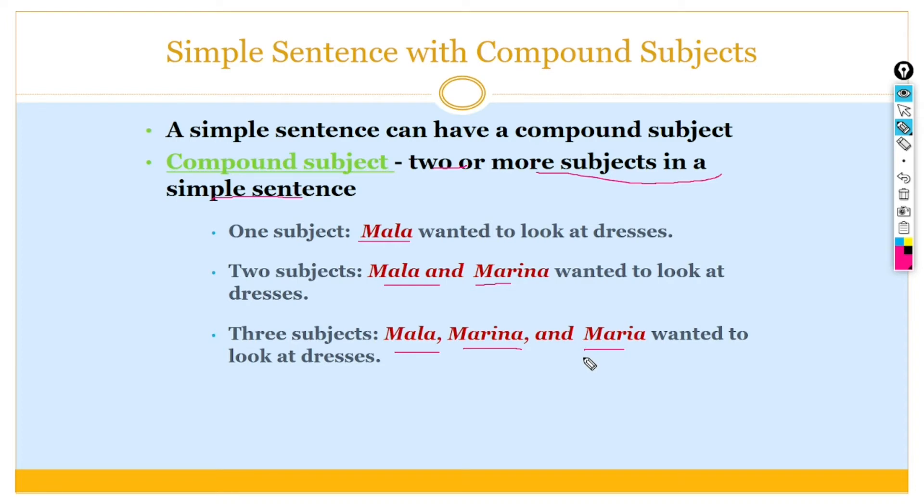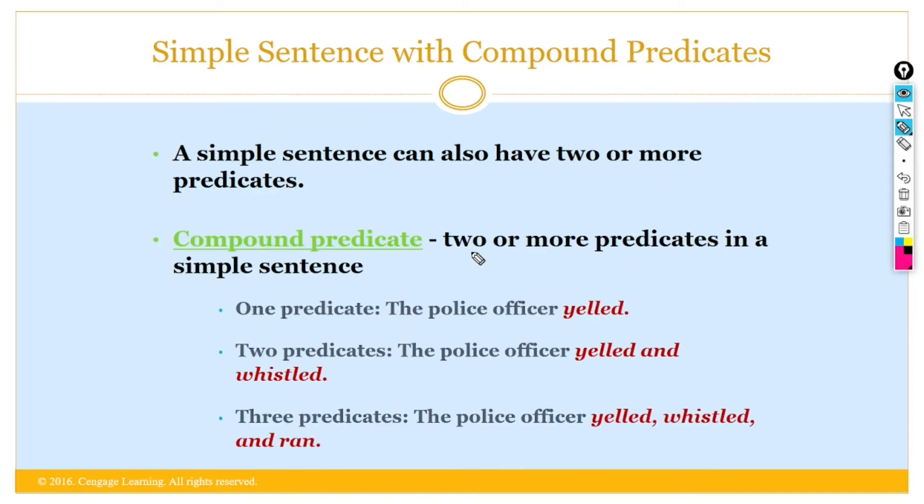A simple sentence can also have two or more predicates. So in this example, compound predicate: two or more predicates in a simple sentence. One, in this example, one predicate, the police officer yielded. Yielded and whistled. Yielded and whistled are compound predicates. Similarly there are three predicates, the police officer yielded, whistled and ran. So in this sentence we have three predicates. And if we have more than one predicate, that is called the compound predicate.